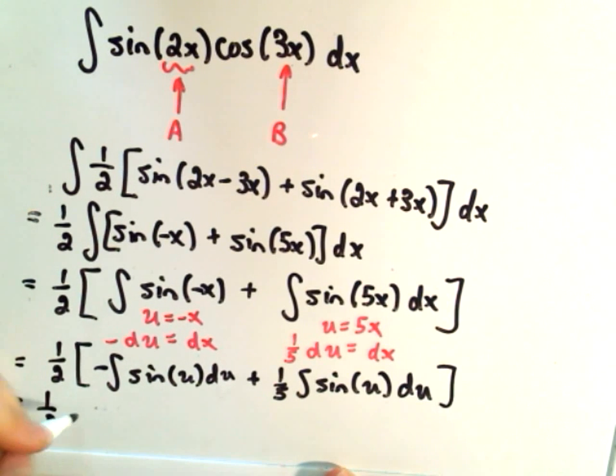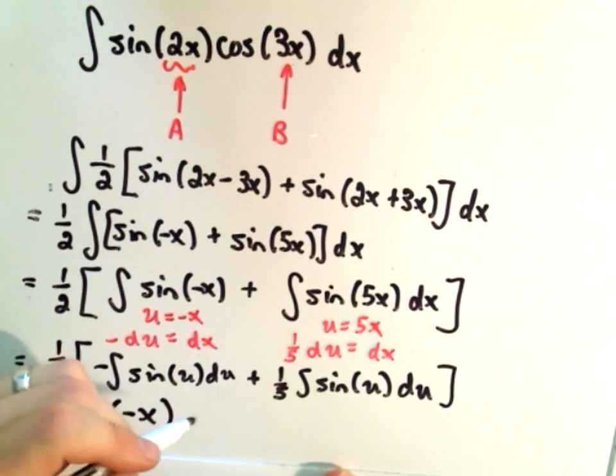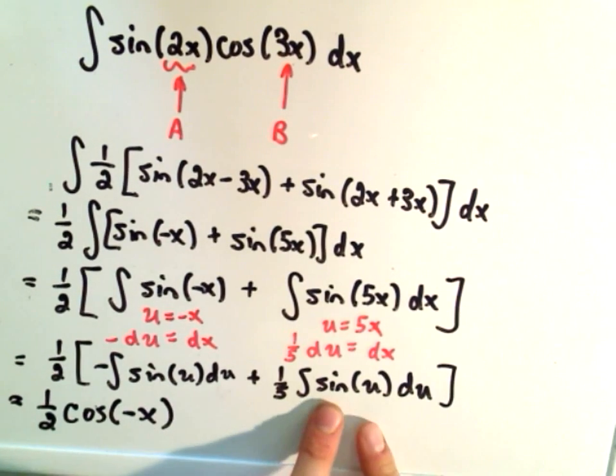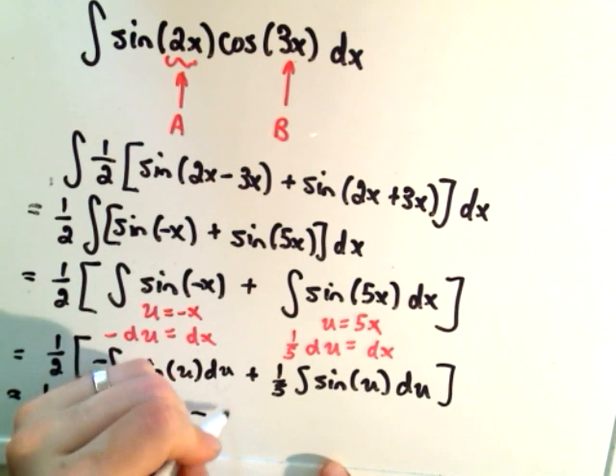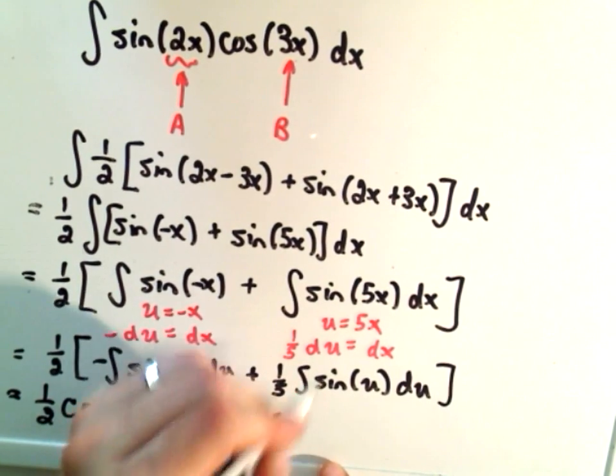The anti-derivative of sine is negative cosine, so that negative will cancel out, and that will give me cosine of u, which is negative x. If I integrate sine of u, I get negative, so I pull that out front,